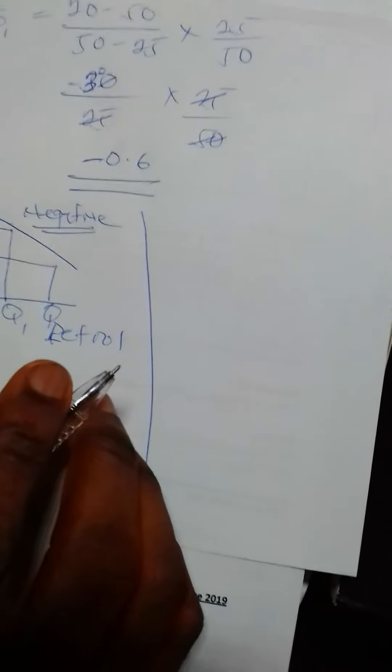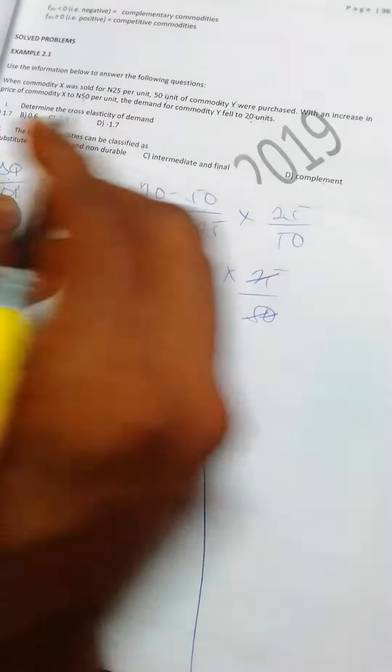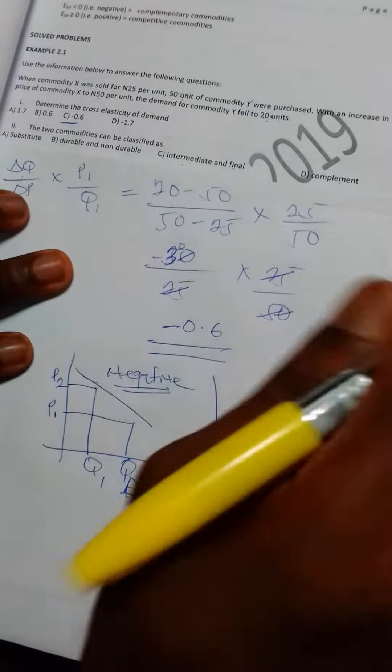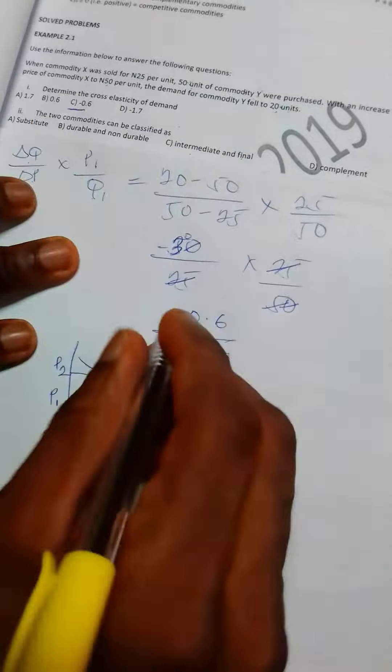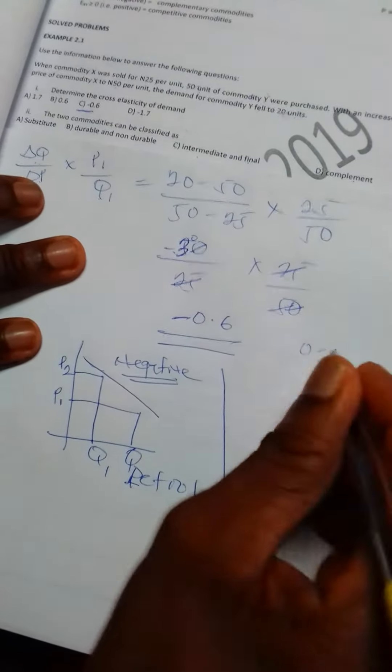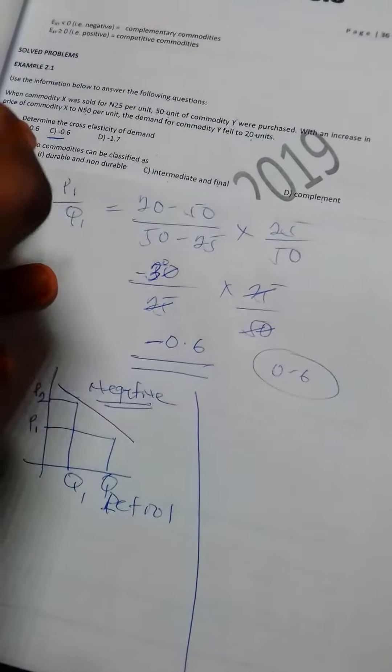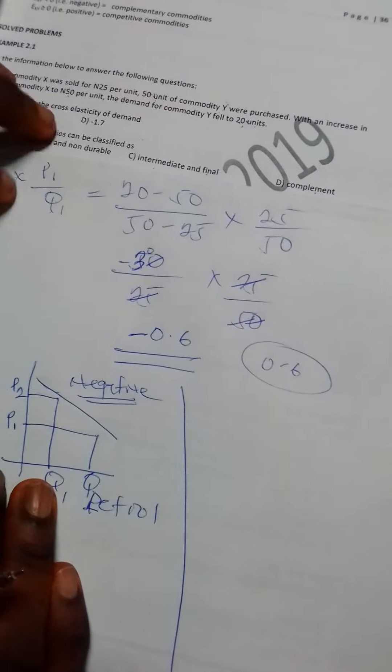All right, so like we said in that previous video, the answer is complement, complement, complement as option B. However, we can have a situation whereby we will have a substitute commodity, what we call competitive demand. That would be if the answer was just 0.6, if we are not having a negative sign. That is, we are just having 0.6, no negative sign to it.